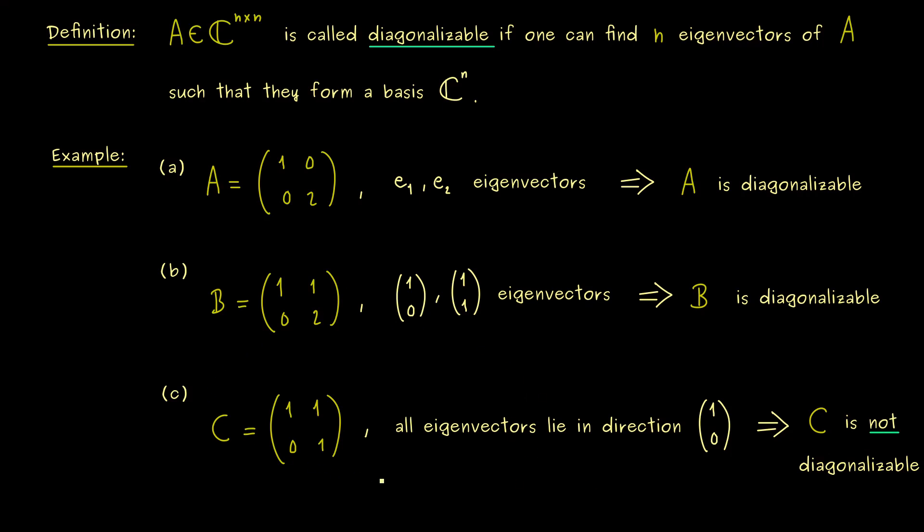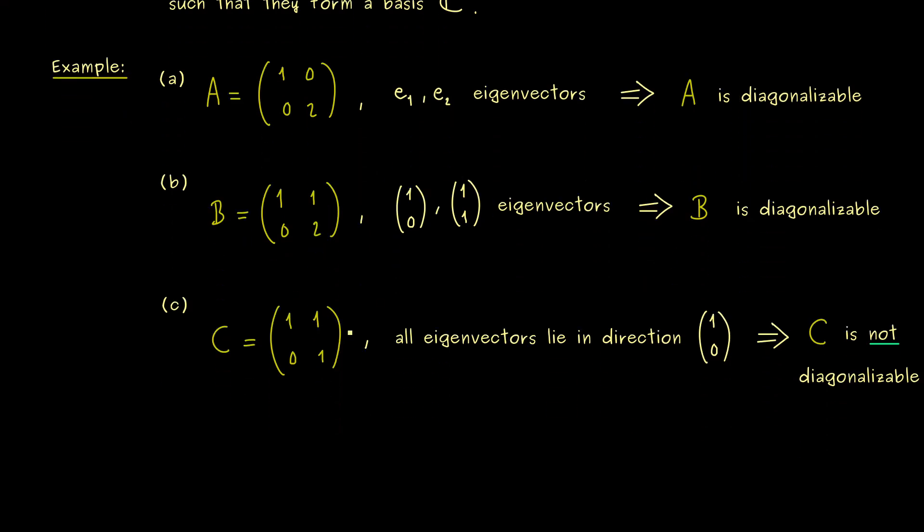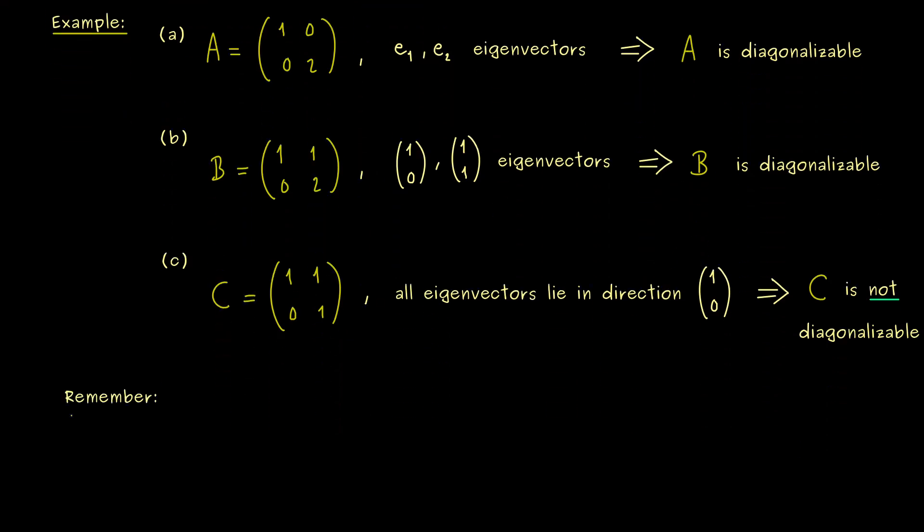So we see, even for simple matrices, the property diagonalizability can fail. However, some subsets of matrices always fulfill this property. And this is the last thing I want to tell you here. This is definitely something you should remember.